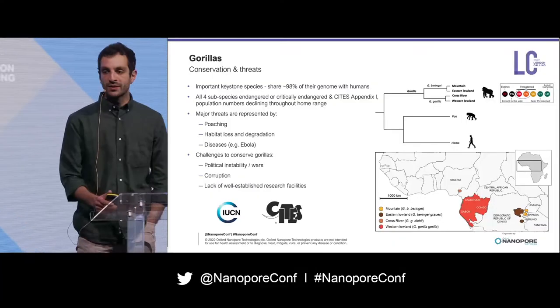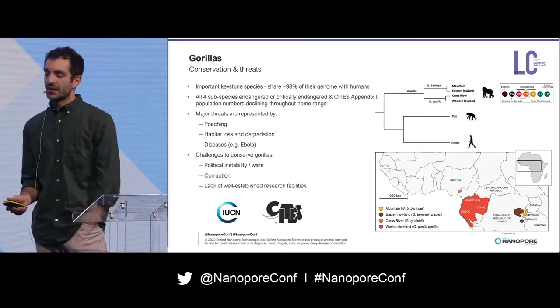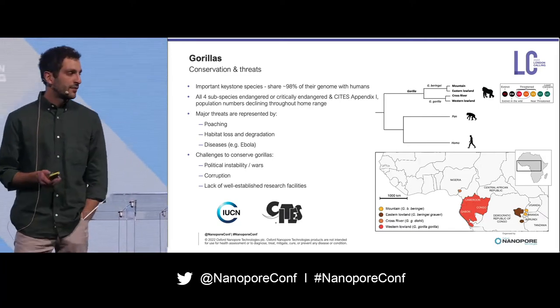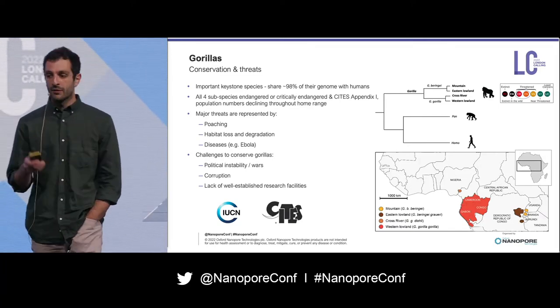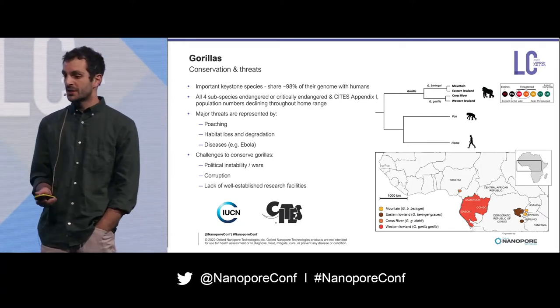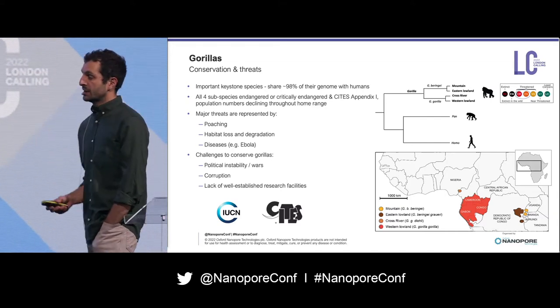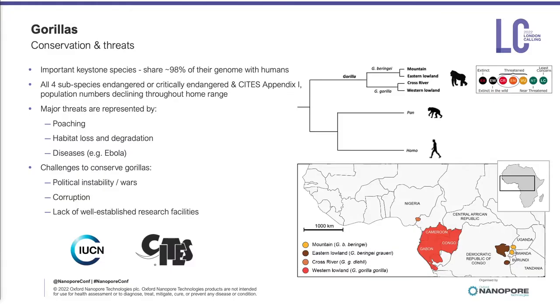We are all aware that we're living through one of the worst extinction events in the history of our planet. In fact, we're losing an ever-growing number of animals and plants, and gorillas — one of our closest relatives and an ecologically important species — are no exception.